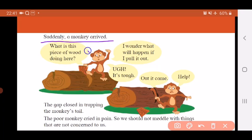Bandar bolta hai, what is this piece of wood doing here? So the man had put this piece of wood which we call the wedge in between where they had cut the log. The monkey is wondering what is this wedge or this piece of wood doing over here? I wonder what will happen if I pull it out. Toh bandar ab kya soch raha hai ki main agar is tukde ko bahar nikalunga toh kya hoga.